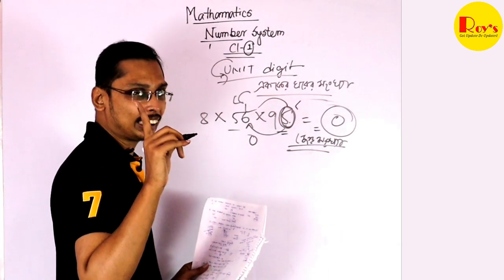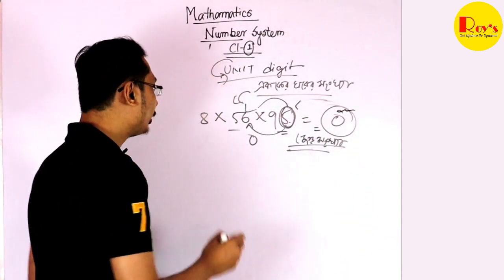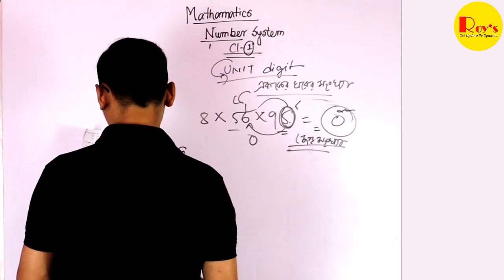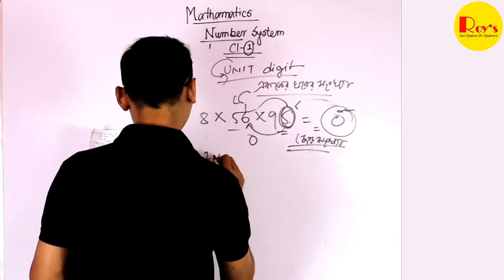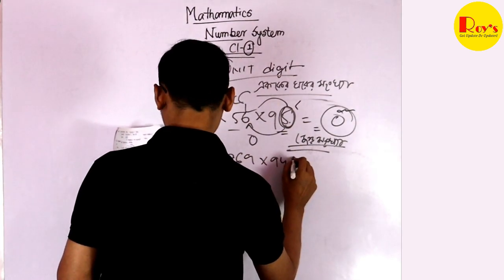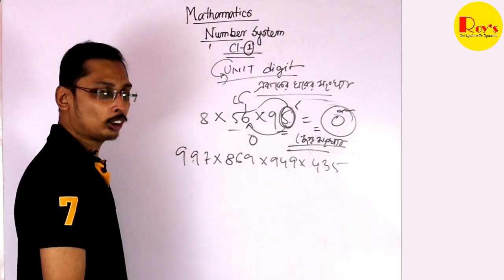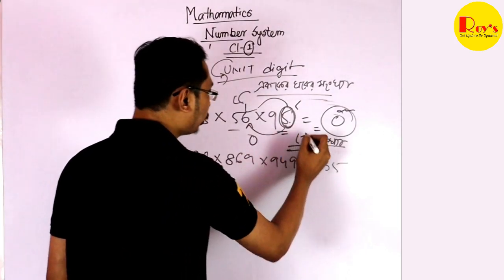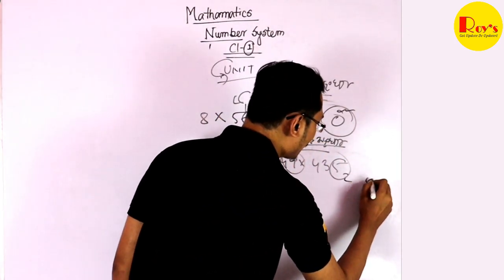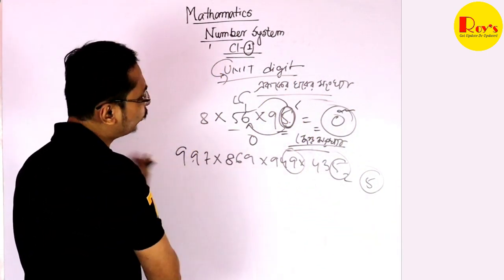Another answer would come up: 997 x 869 x 949 x 435. The first thing is, when you have zero, you have zero unit digit. Always the unit digit is five — if you look at the same thing.